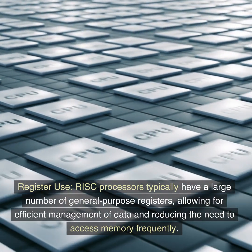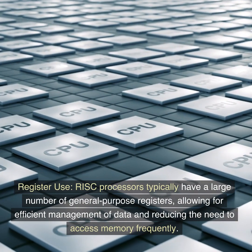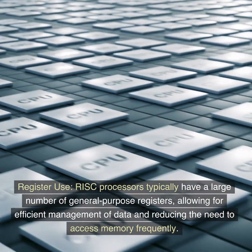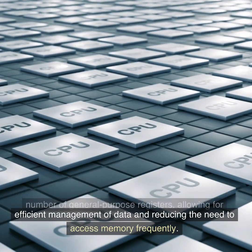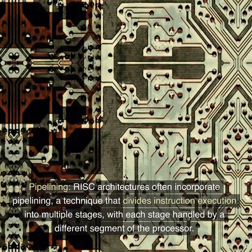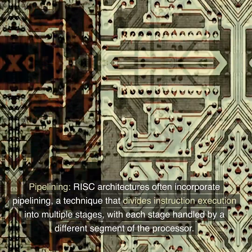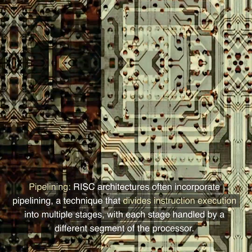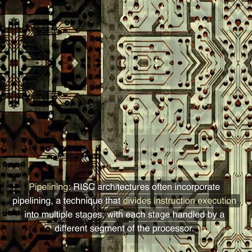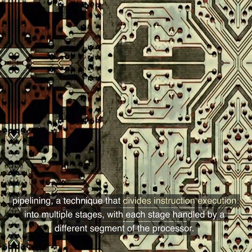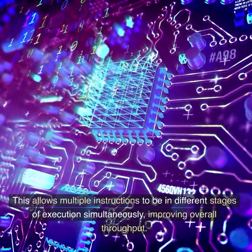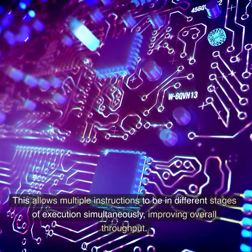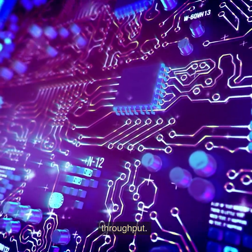Register use: RISC processors typically have a large number of general-purpose registers, allowing for efficient management of data and reducing the need to access memory frequently. Pipelining: RISC architectures often incorporate pipelining, a technique that divides instruction execution into multiple stages, with each stage handled by a different segment of the processor, allowing multiple instructions to be in different stages of execution simultaneously, improving overall throughput.